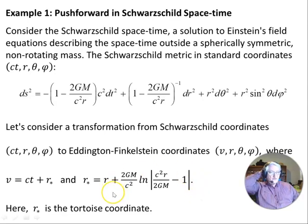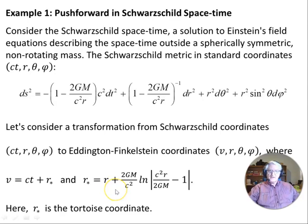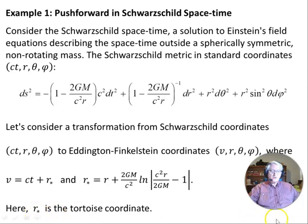If you have a look at my videos on the Eddington-Finkelstein — there are two of them on this channel — you'll see a more detailed explanation of what's going on here. Here r★ is the tortoise coordinate.